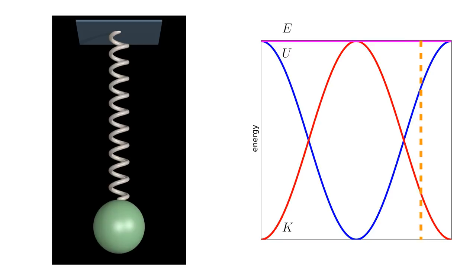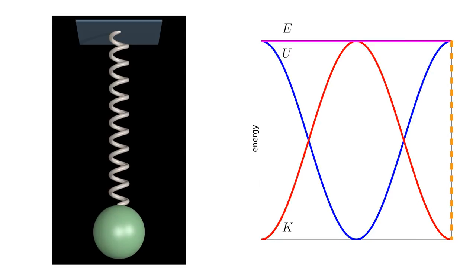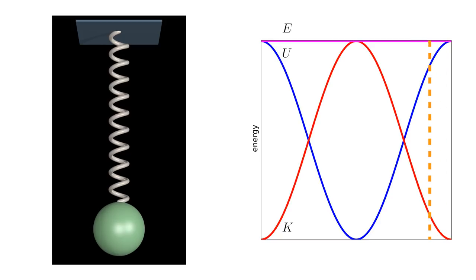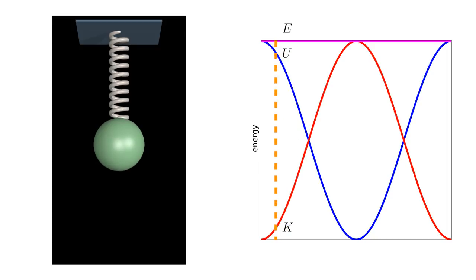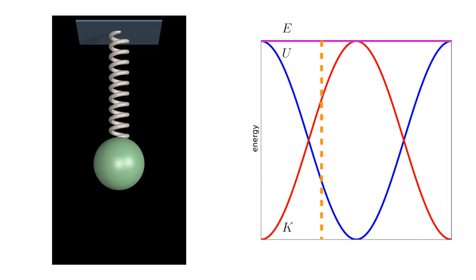It reaches a maximum at x equals zero, where the spring force disappears and the potential energy is zero. As the mass falls further, the spring pulls upward. This decelerates the mass, decreasing kinetic energy. At the same time, the stretching spring increases potential energy. At the bottom of the oscillation, the mass comes to rest: there is no kinetic energy, and all energy is potential again. Then the upward half of the oscillation mirrors the downward half.